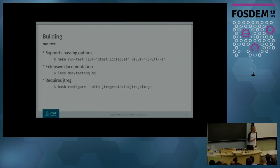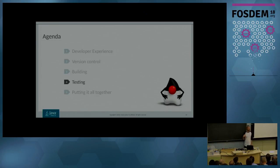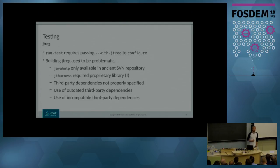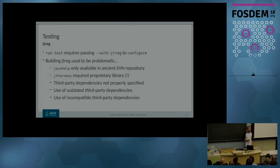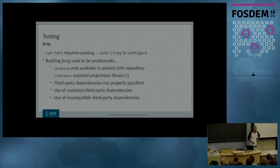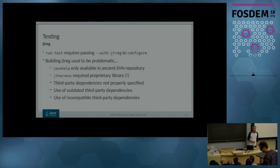This leads us to the next section about testing, because getting a proper JTReg image hasn't always been the easiest. Building JTReg used to be problematic: JavaHelp, a dependency of JTReg, was only available in an ancient Subversion repository. JTReg Harness, another dependency, actually required a proprietary library. The third-party dependencies for JTReg were not properly specified — what version to use, where to get it from. And if you did find the version, you'd realize they were outdated and actually incompatible with each other, making it very hard to get a correctly built JTReg version.